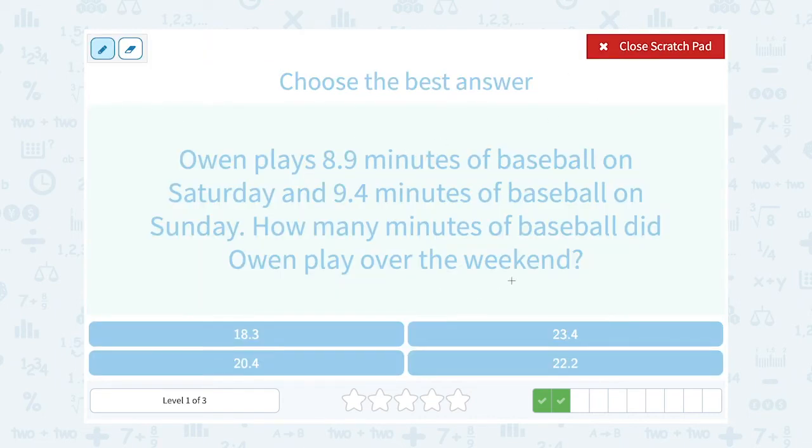Okay, well if we want the total amount for both Saturday and Sunday, we would have to add these two numbers together. So I'm going to say 8.9 plus 9.4.